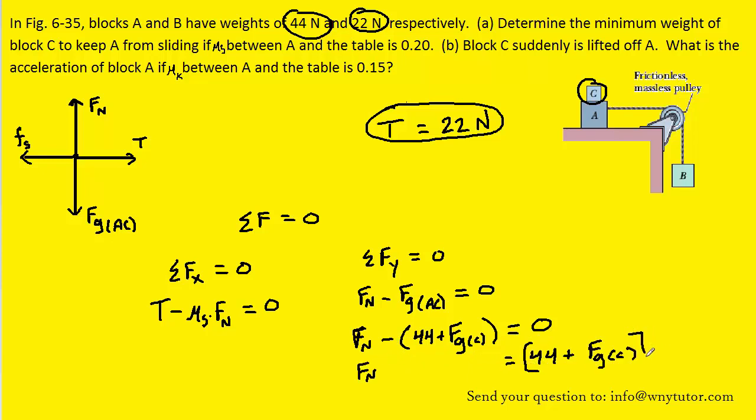Then what we'll do is we'll take this expression for the normal force and plug it into the equation we had derived for the X direction. Let's go ahead and plug in for the tension as well as the coefficient of static friction, and that's going to allow us to solve for the force of gravity acting on object C, which is essentially the weight of object C.